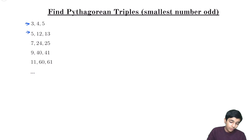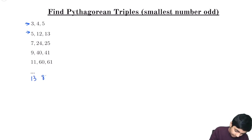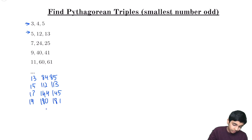All of these are Pythagorean triples: 3, 4, 5; 5, 12, 13; 7, 24, 25; 9, 40, 41; 11, 60, 61; 13, 84, 85; 15, 112, 113; 17, 144, 145; 19, 180, 181. And we can continue more and more.